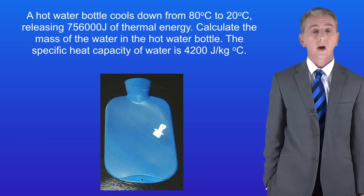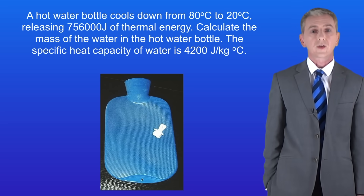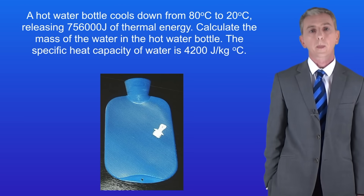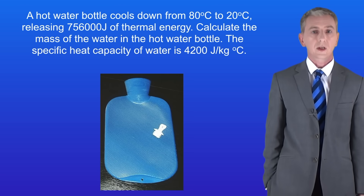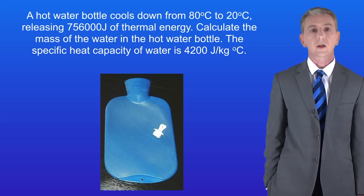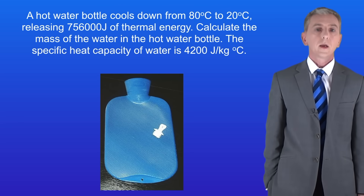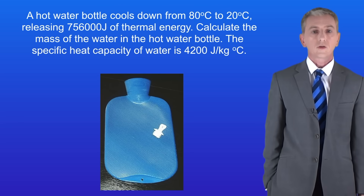Here's a final question for you to try. A hot water bottle cools down from 80 degrees Celsius to 20 degrees Celsius, releasing 756,000 joules of thermal energy. Calculate the mass of water in the hot water bottle. The specific heat capacity of water is 4200 joules per kilogram per degree Celsius. To answer this question you're going to have to rearrange the equation to find the mass. Pause the video and try this yourself.